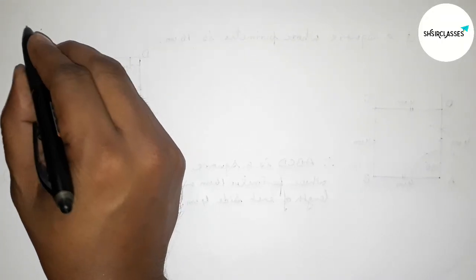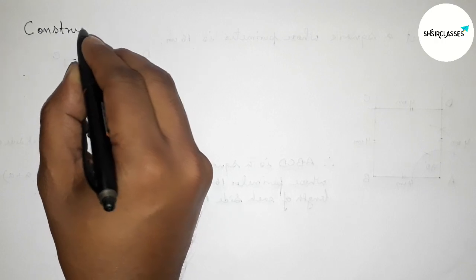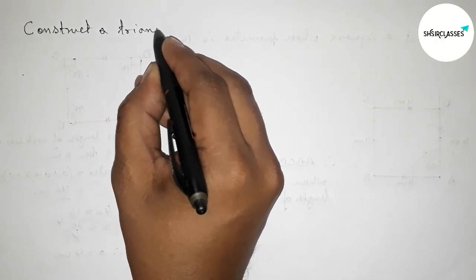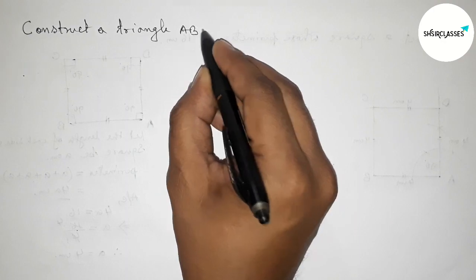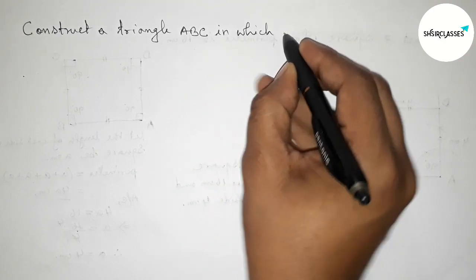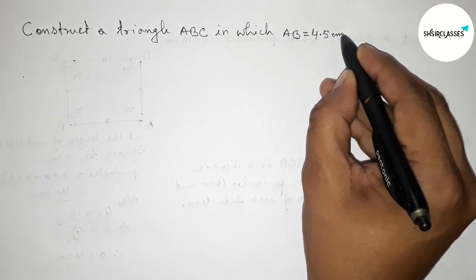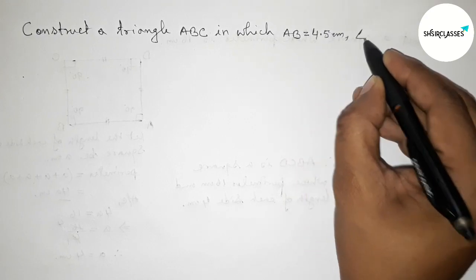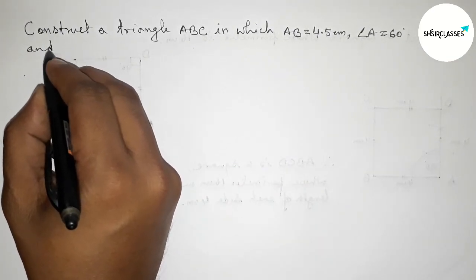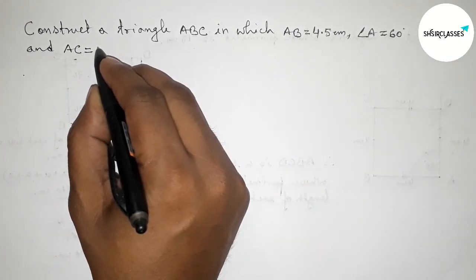Hi everyone, welcome to SI Share Classes. Today in this video we have to construct a triangle ABC in which AB equals 4.5 centimeters, angle A equals 60 degrees, and AC equals 3.5 centimeters. Please watch the video till the end.